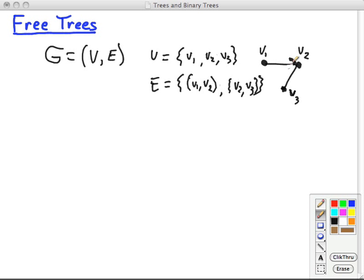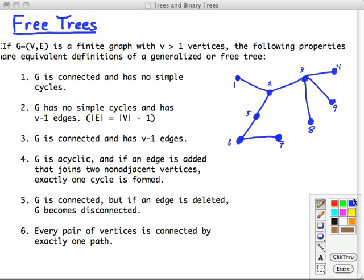What I've just shown you is also a tree, a free tree. Let's look at the definition, actually six definitions of free trees. We're going to use this notation to define a graph G equals VE, a finite graph with at least one vertex. The following properties are equivalent definitions of a generalized or free tree. You can prove each of these properties in sequence using the previous one as the assumptions.